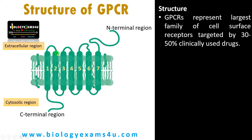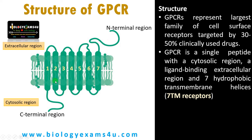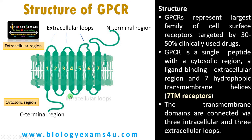Now let us see the structure of GPCR. GPCR represents the largest family of cell surface receptors. This receptor is a single peptide with a cytosolic region and a ligand-binding extracellular region. It is made up of 7 transmembrane helices, numbered 1 to 7. These helices are joined by 3 extracellular loops and 3 intracellular loops. As this is made up of 7 hydrophobic transmembrane helices, this receptor is also called the 7-TM receptor, where TM means transmembrane.